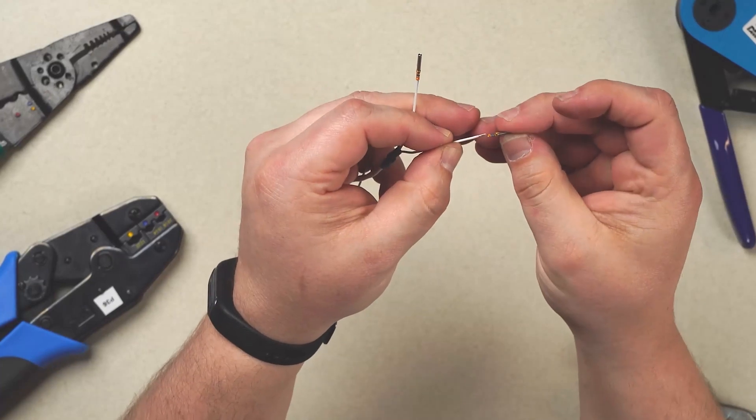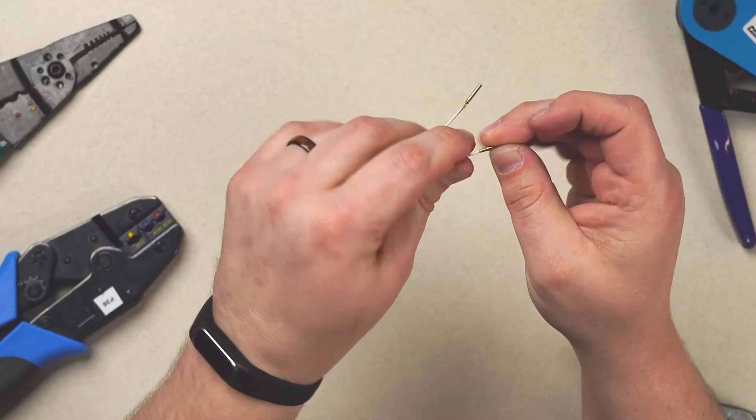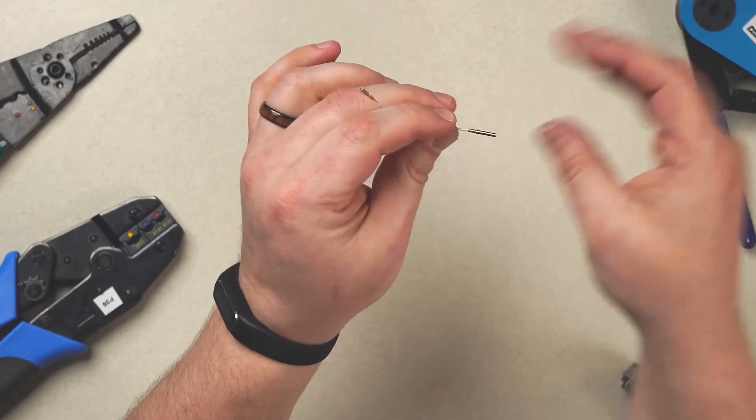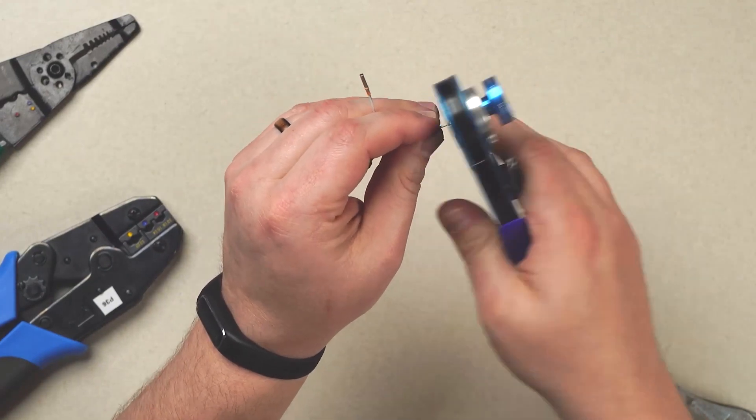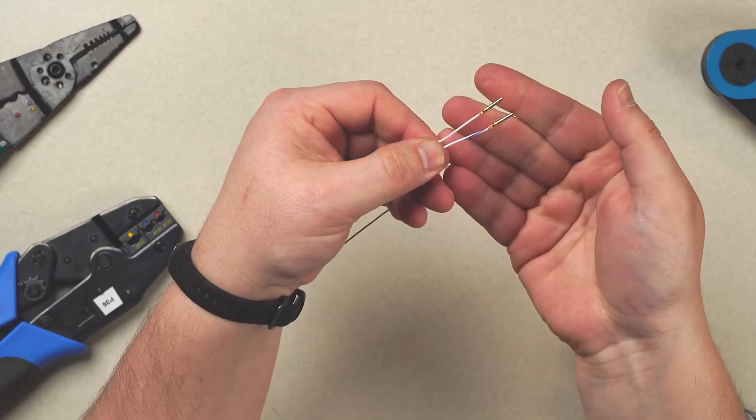Same thing on our second wire here. We're going to use the window. We see the wire in the window. We see that our insulation is not inside of the pin itself. So we're bottomed out properly. Crimper set properly. Well executed crimp every single time.